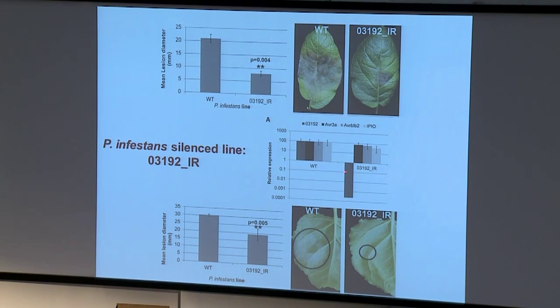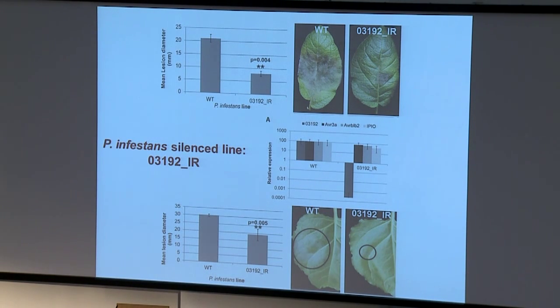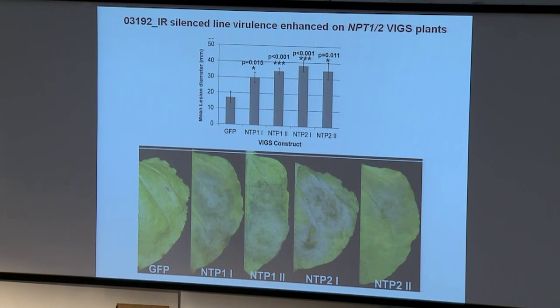So it appears that NTP1 and NTP2 are either both involved functionally non-redundantly in different defense responses, or they act potentially together — remember they are coordinately upregulated. We have a P. infestans line stably transformed to silence 03192, which is significantly downregulated but with other effectors such as AVR3A, AVRBLB2, and IPI01 undisturbed. This silenced line is reduced in its ability to colonize both potato and Nicotiana benthamiana. However, when we put this silenced line onto our VIGS plants where we've knocked down NTP1 and NTP2, we see dramatic colonization restored — showing that when you silence an effector essential for infection, removing its targets from the plant restores infectivity.